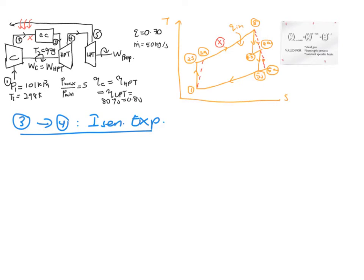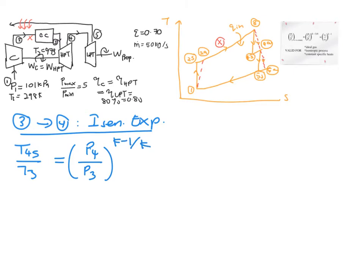What we are looking for is T4S, because T3 is already given — the completion of the combustion process produced 700 degrees Celsius. The equation becomes P4 over P3 raised to the power of (K minus 1) over K. As you can see, the pressure ratio is defined as the ratio between maximum and minimum, giving a value of 5. However, we are currently at an intermediate pressure, so we need to find P4 first.